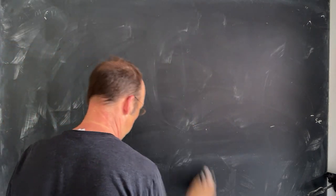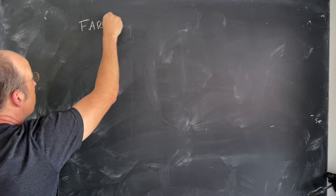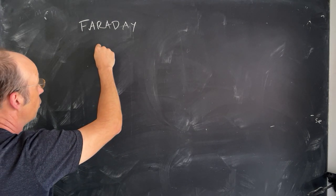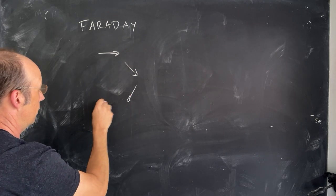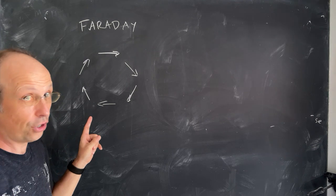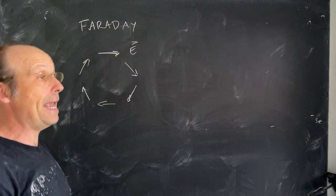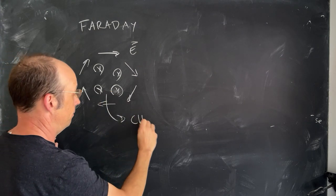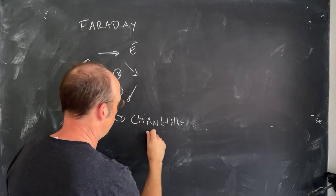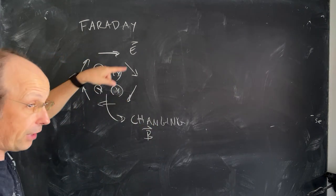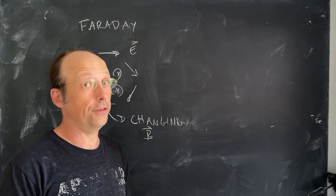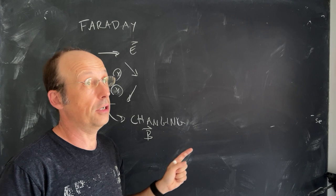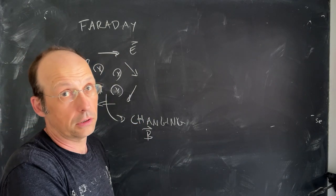The next equation is Faraday's law. Faraday's law says that I can make a curly electric field — it doesn't start and end on a charge, it just makes a circle. How do I make a curly electric field? I need a changing magnetic field, ΔB/Δt. A changing magnetic field creates this curly electric field. That's what the changing flux was about. Faraday's law: changing magnetic field makes a curly electric field.